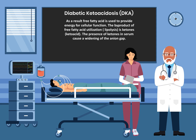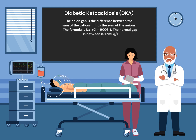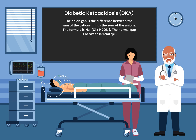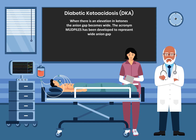The presence of ketones in serum causes a widening of the anion gap. The anion gap is the difference between the sum of the cations minus the sum of the anions. The formula is sodium minus chloride plus bicarb. The normal gap is between 8 to 12 milliequivalent per liter. When there is an elevation in ketones, the anion gap becomes wide.